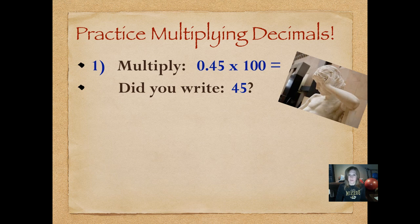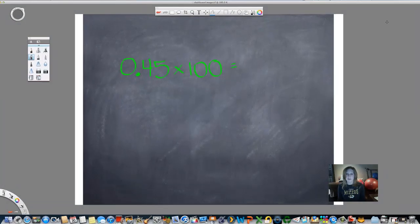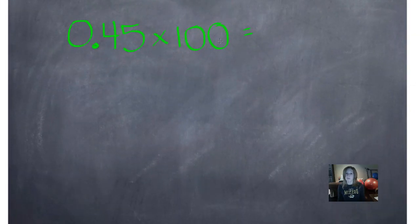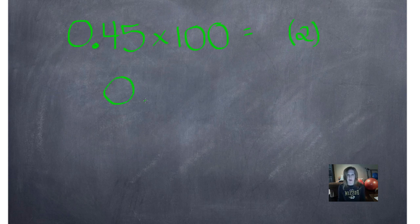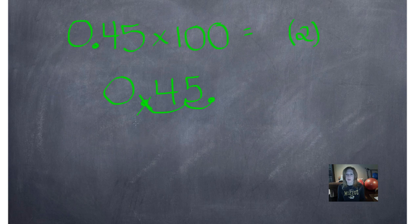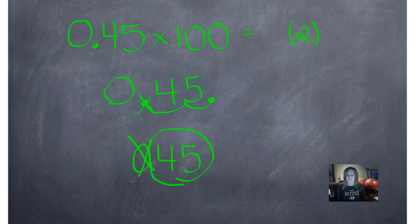Did you write 45? Let's see how we did that. Step one is to count how many zeros are in 100: one, two. So we'll put a little two here — that's how many places we're going to move our decimal to the right. As we rewrite 45 hundredths, we're going to leapfrog our decimal two places to the right: one, two. Notice I'm jumping between the numbers, not pointing to them. That's where our decimal is now. When we rewrite the number, we don't put the decimal at the end, and we don't need that leading zero anymore — it has no value as a placeholder. So our answer is 45.